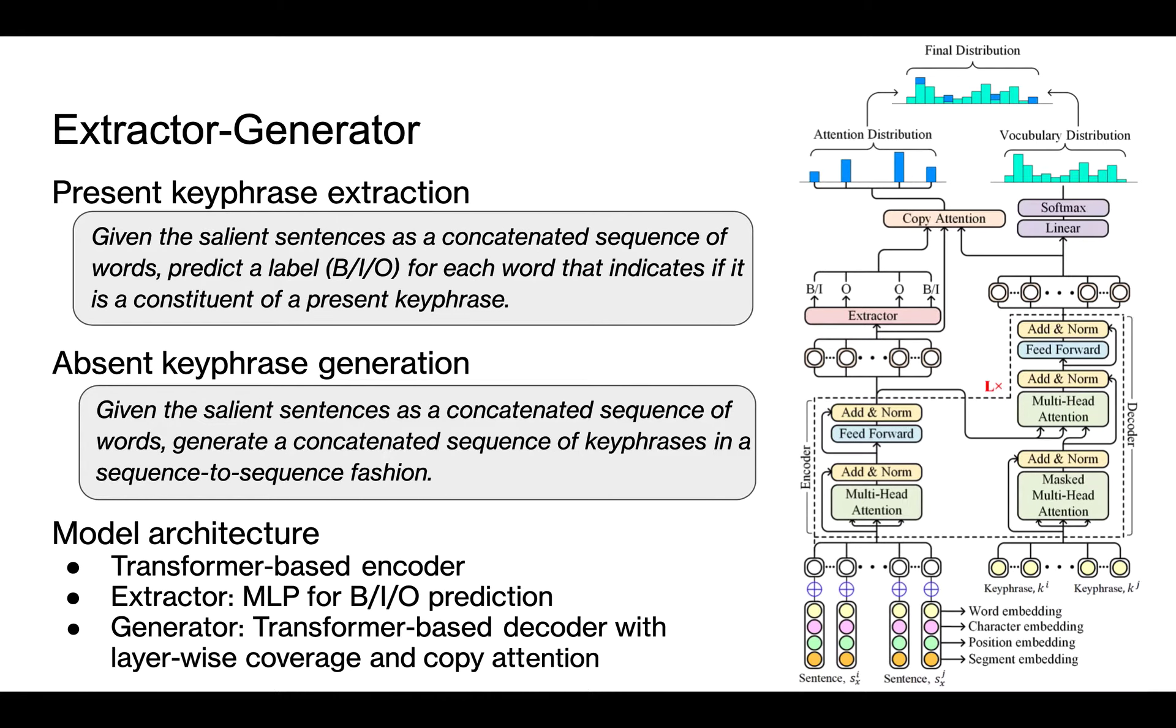The extractor generator component has two sub-tasks. The first task is present keyphrase extraction. Given the salient sentences as a concatenated sequence of words, the extractor predicts a label of beginning, inside, or outside for each word that indicates if it is a constituent of a present keyphrase.